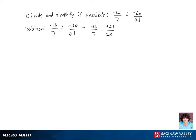Now remember when you're multiplying two negatives, it turns out to be a positive, so let's just go ahead and cancel the negatives right now. So we're left with 12 times 21 over 7 times 20.